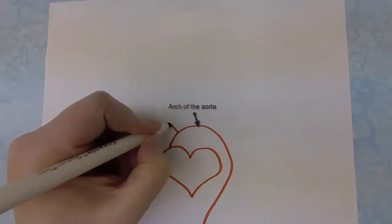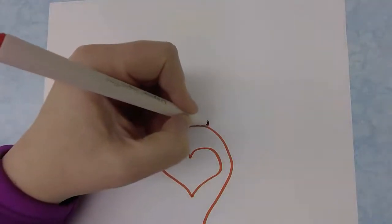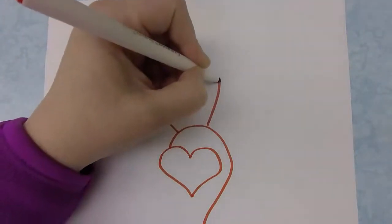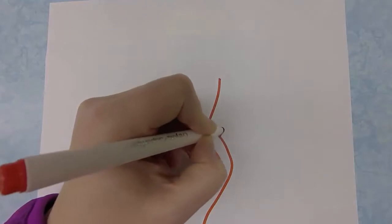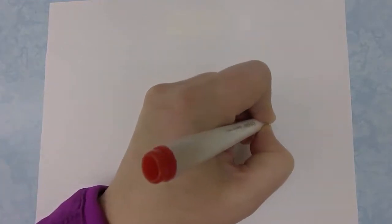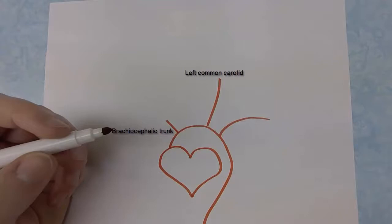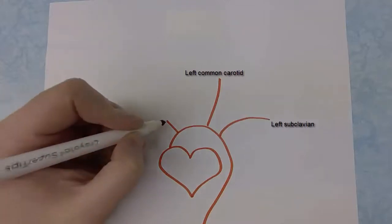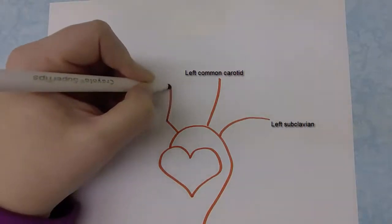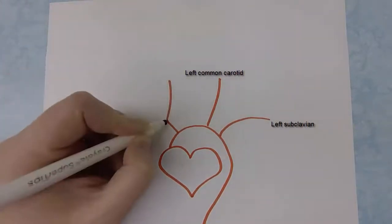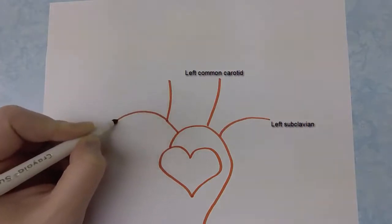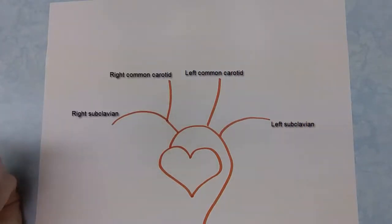The arch of the aorta has three main branches, so this is asymmetrical at this point. The first branch on the right is the brachiocephalic trunk. Then we have the left common carotid and left subclavian arteries. The brachiocephalic trunk needs to divide so that we do get symmetry, giving us the right subclavian and the right common carotid arteries.